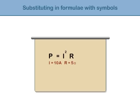Simply substitute numbers for letters as before. Remember, i squared means i times i. So power equals 10 times 10 times 5. The answer is 500 watts.